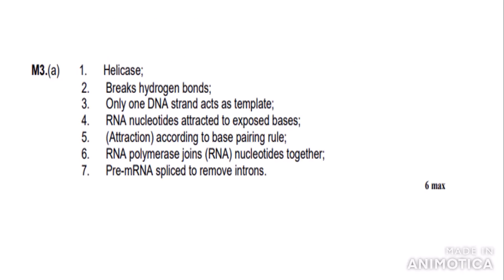Looking at the mark scheme: mention helicase breaking hydrogen bonds between complementary base pairs; only one DNA strand acts as template; RNA nucleotides are attracted to exposed bases according to the base pairing rule; RNA polymerase joins RNA nucleotides together; pre-mRNA is spliced to remove introns. That gives all six marks. Note there are seven possible marking points, but this is a six-maximum question — you do not lose marks for omitting one point.